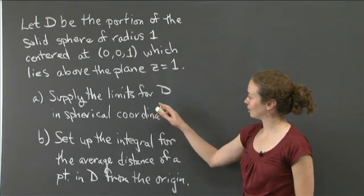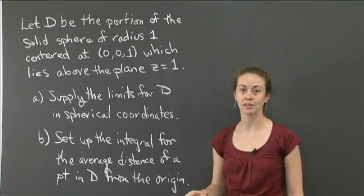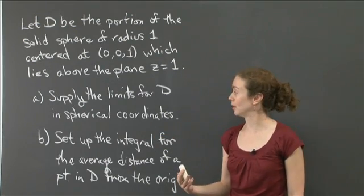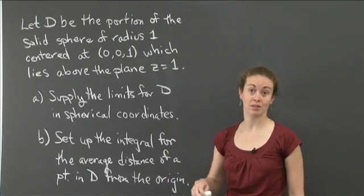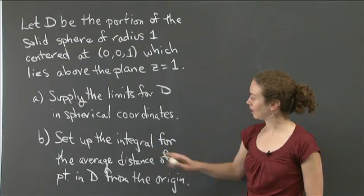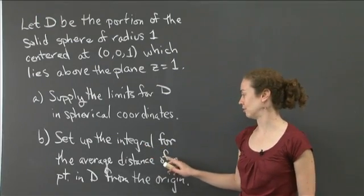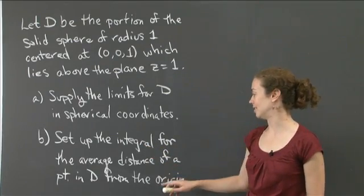And then I'd like us to first supply the limits for D in spherical coordinates. In other words, I want you to determine the values for rho, theta, and phi that will give us all of D.